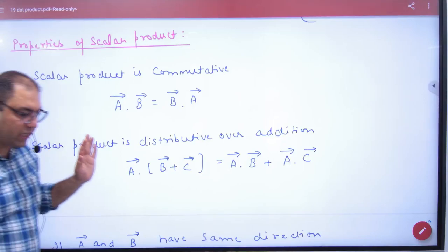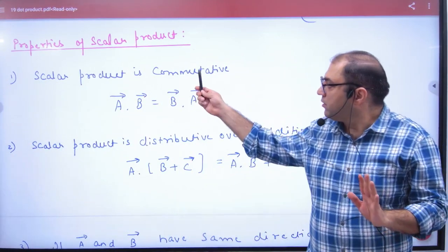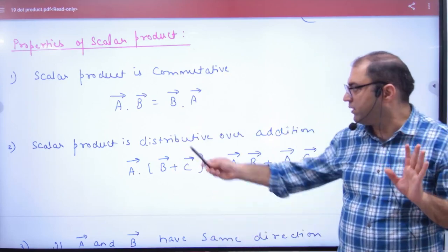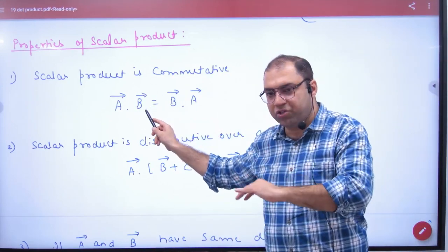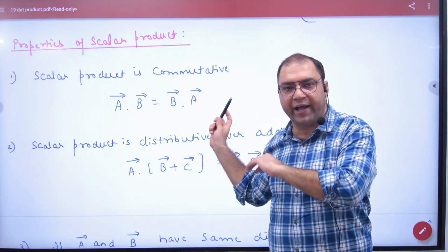In the properties of scalar product, scalar product is commutative. A vector dot B vector is equal to B vector dot A vector. That means, if I dot J is zero, then J dot I is zero.